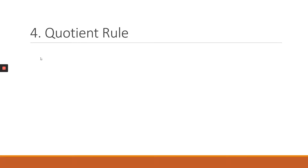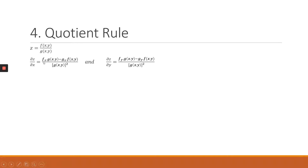Now we'll look at how we can use the quotient rule in solving partial differentiation problems. Assuming we are given a z function which is basically in a format of a fraction made up of two functions — an f function which is the numerator and a g function which is the denominator. Both are explained by two independent variables, x and y. So if we differentiate the z function with respect to either x or y, because we have x and y in both the numerator and denominator, we have to use the quotient rule.